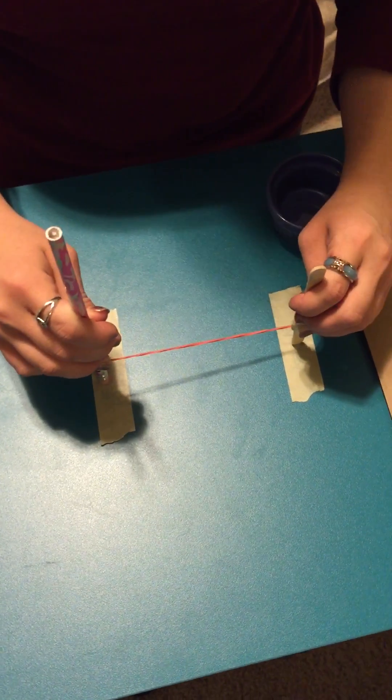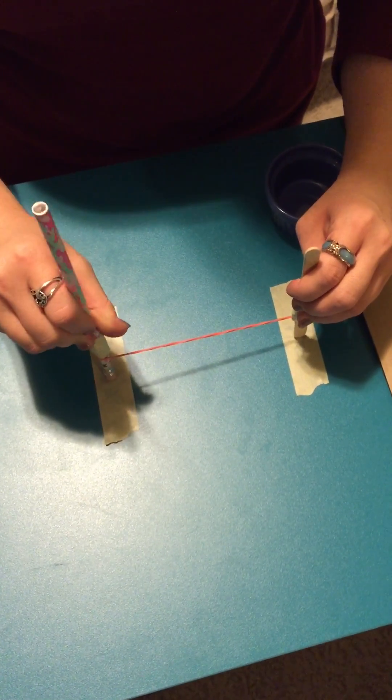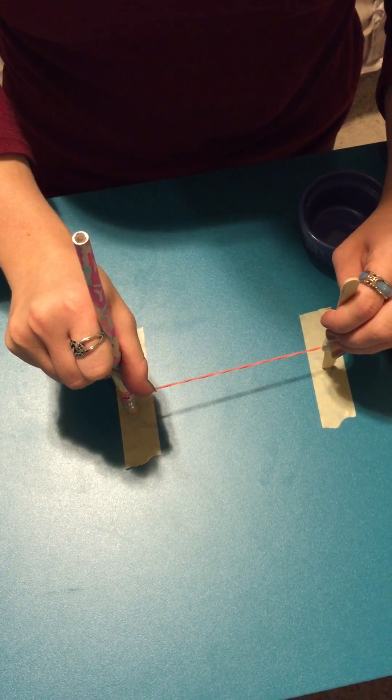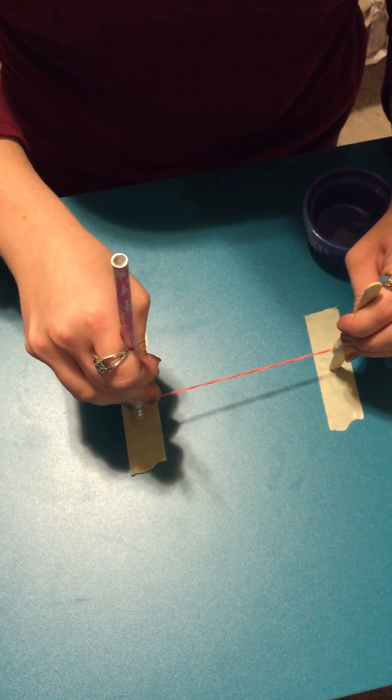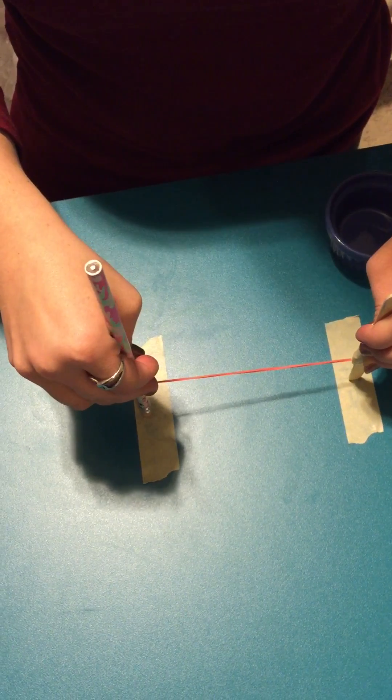In order to increase the tension or tighten the tension, you are going to rotate the pencil, much like screwing on the water bottle cap. In order to decrease the tension, you are going to unwind the pencil.